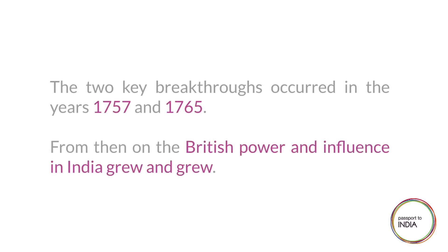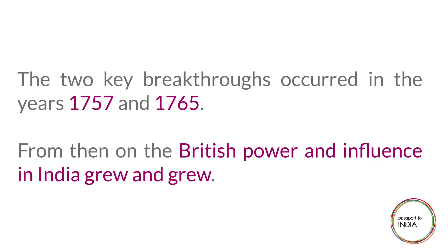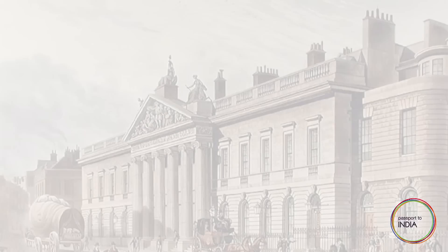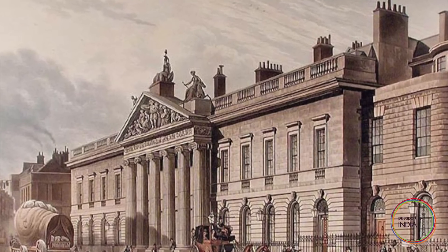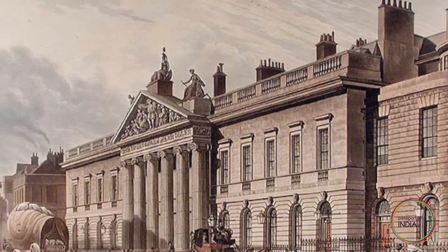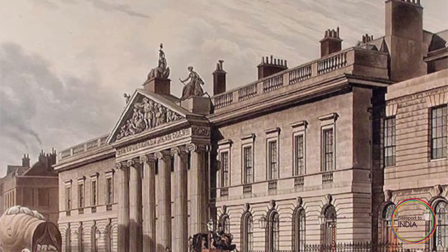The British did not come to power overnight in India. They were one of many European powers, not to mention large Indian kingdoms. The two key breakthroughs for the British occurred in the years 1757 and 1764. From then on, British power and influence in India grew and grew. It must also be remembered that while we say the British, we really mean the British East India Company, a corporation with shareholders headquartered in London — arguably one of the world's first multinational corporations.